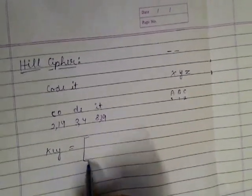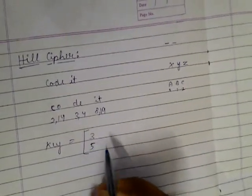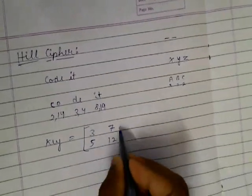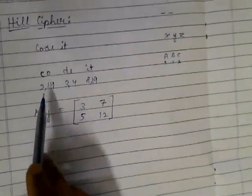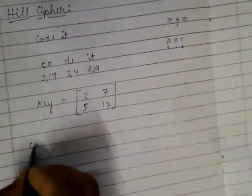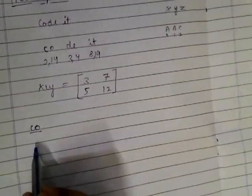Now what we have to do: we are given a key. This key will be given by the question, that is 3, 5, 7, 12. Keys can vary according to different questions.